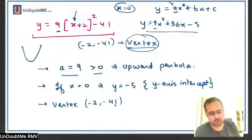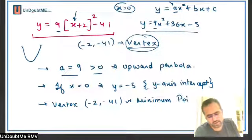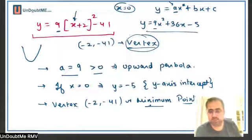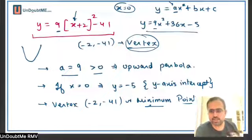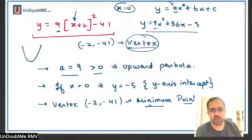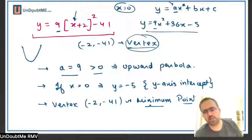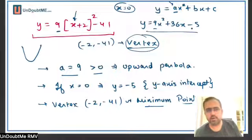The vertex is, for this case, the minimum point. At least these three things should be clear: direction of parabola, y-intercept, and vertex. After that, we have to find the roots. For finding the roots it is not necessary to use factorization — you can use the formula method. I am leaving that to you to get the two values of x.